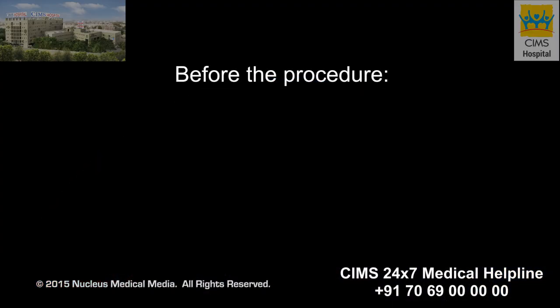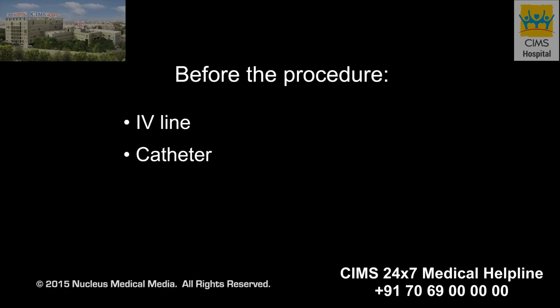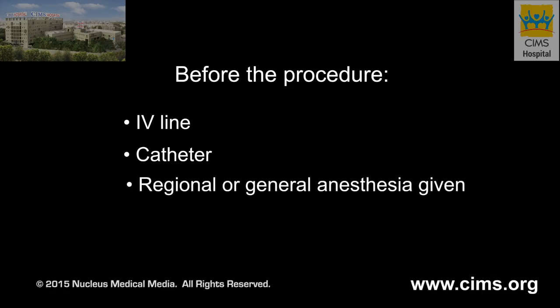When a cesarean section becomes necessary, you will be prepped for surgery. If not already in place, an intravenous line will be started and a catheter will be inserted into your bladder to drain urine. In the operating room, you will be given anesthesia. In most cases, a spinal anesthetic is administered to numb the lower portion of your body.